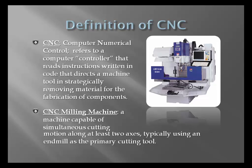A CNC milling machine is a machine capable of simultaneously cutting motion in at least two axes. When you think of the axes, left and right might be the X, forward and back might be Y, and up and down might be the Z. So at least two of those axes at the same time, usually using an end mill as a primary tool.